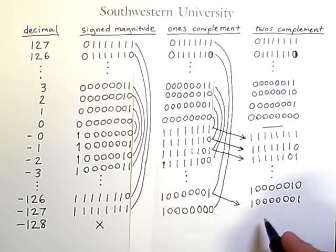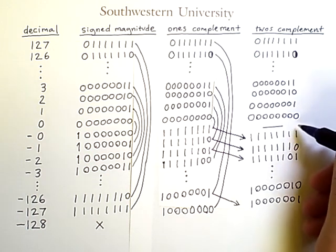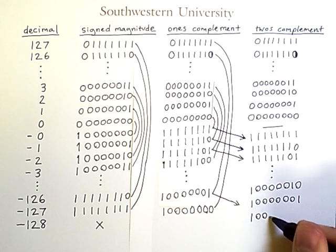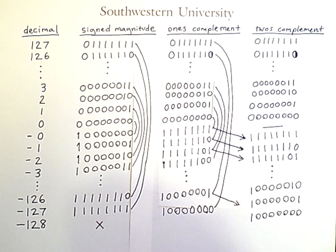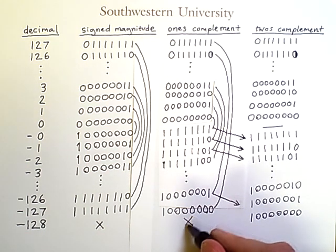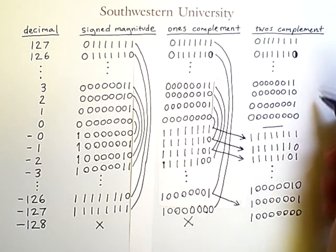There is an extra row here for negative 128. Because two's complement doesn't have two forms of zero, we actually have room for an extra negative number, namely 1,0,0,0,0,0,0,0 — which corresponds to negative 128. So that is another small benefit of two's complement number representation.